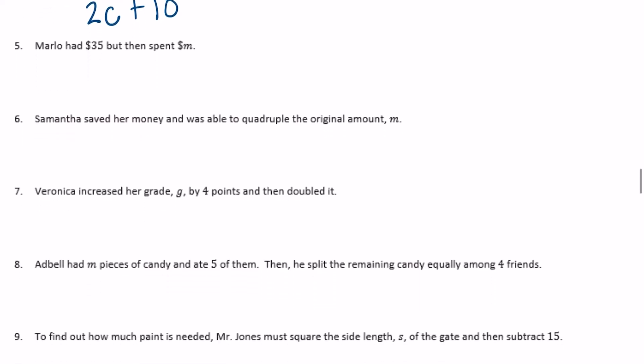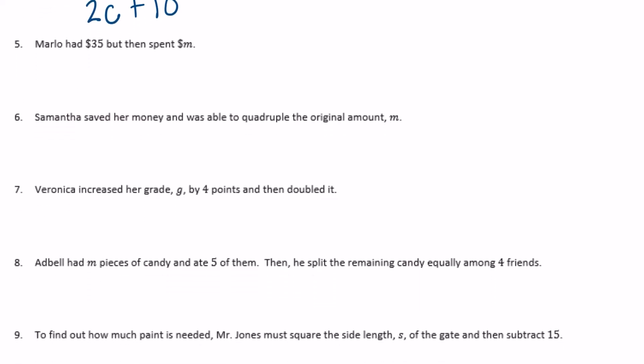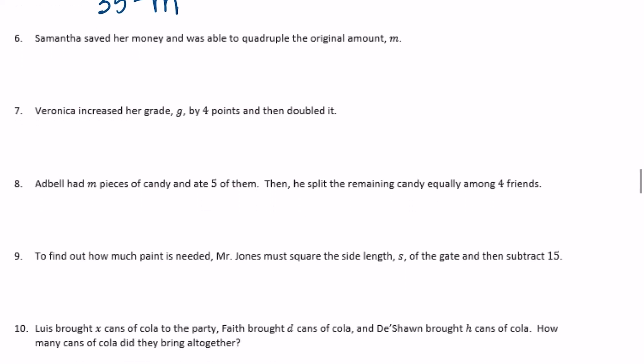Number 5: Marlowe had $35 but then spent M dollars — he had 35 and spent M, so we subtract: 35 minus M. Number 6: Samantha saved her money and was able to quadruple the original amount M — 'quadruple' means four times — so 4M.